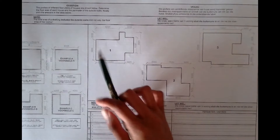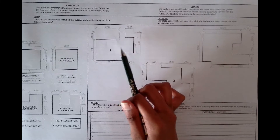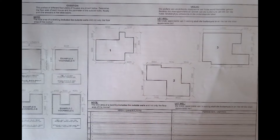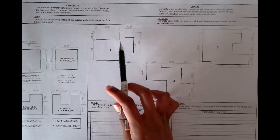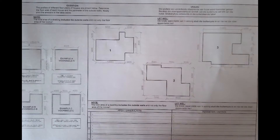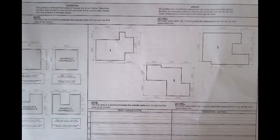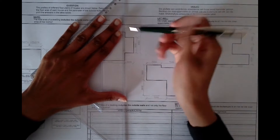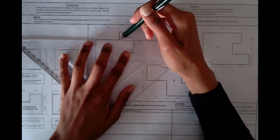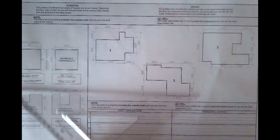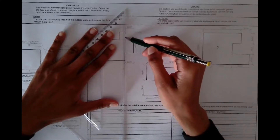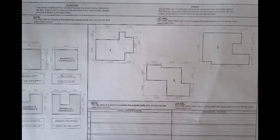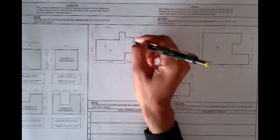First things first, we can see that for the plan given in number one, we need to get all of the area. What I'm going to do is divide my floor plan into about three rectangles. I'm just going to extend this line here like that, and then extend this other one as well like that. Now I have A, B, and C.